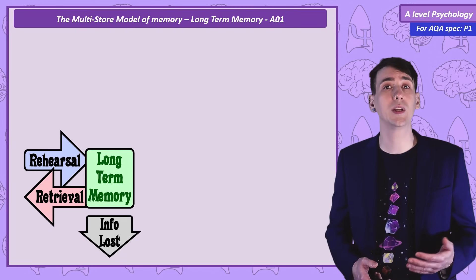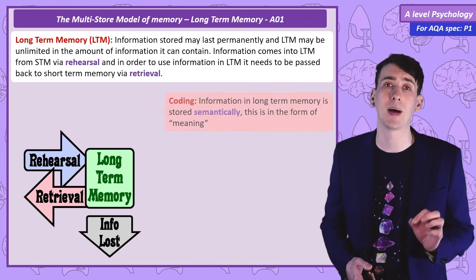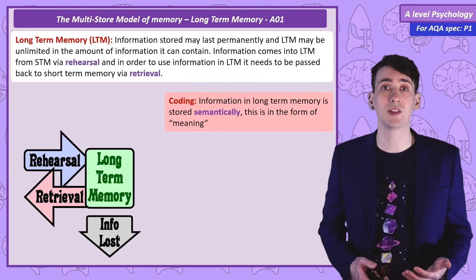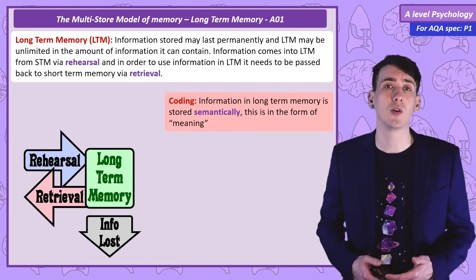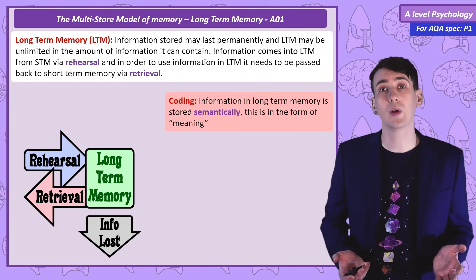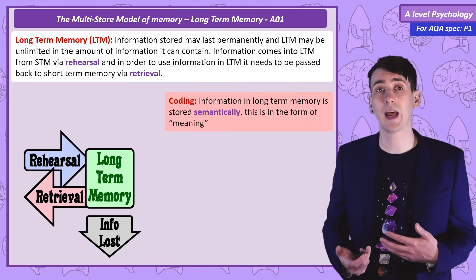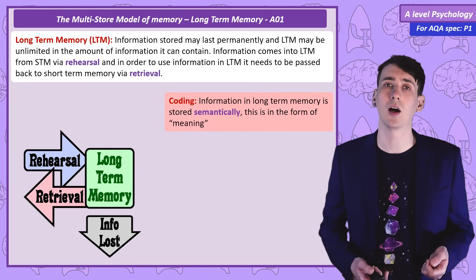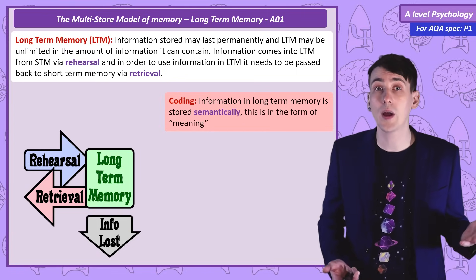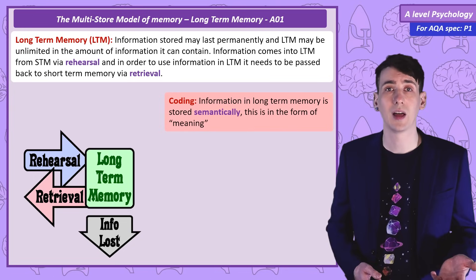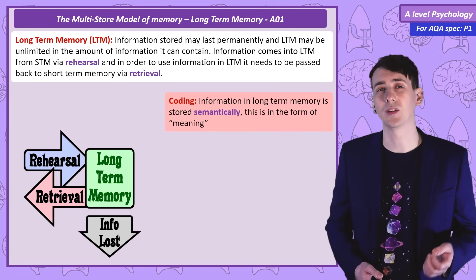The coding in long term memory is semantic coding — the memory is stored as part of a set of meaningful connections to other stored information. For example, we have a semantic connection between the word 'wave' and the idea of a wave of water or waving your hand, and recently you may have developed a semantic connection between the word 'wave' and an increase in illness.